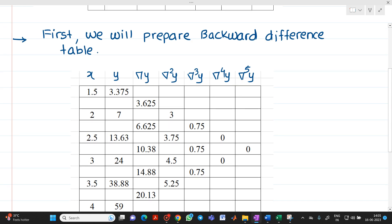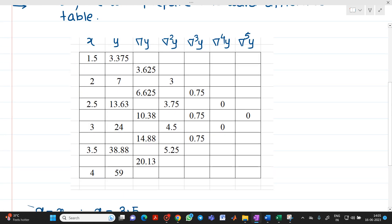So if you see, first we have to prepare backward difference table. This is the data that we have taken x and y. How to find out this value del y? It will be equal to second value minus first value, that is 7 minus 3.375. Then this value will be 13.63 minus 7. Like that, we have to prepare the backward difference table.